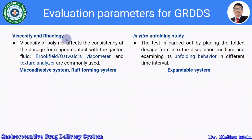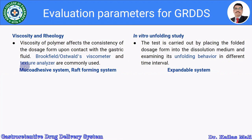For viscosity and rheology study of the polymer: the viscosity of the polymer affects the consistency of the dosage form upon contact with the gastric fluid. It is measured using a Brookfield or Ostwald viscometer and a texture analyzer. This is applicable to mucoadhesive systems and raft-forming systems.